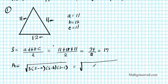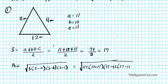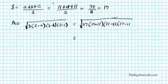That's going to yield the square root of S, which is 17 times 17 minus 11 times 17 minus 12 times 17 minus 11. Let's simplify that further. We're going to have the square root of 17 times 17 minus 11 is 6.